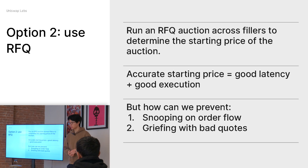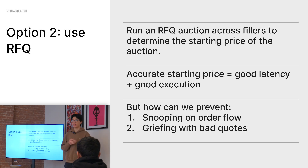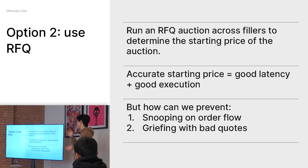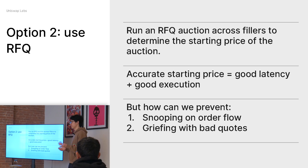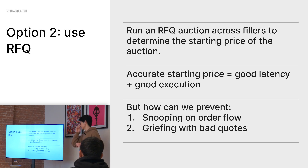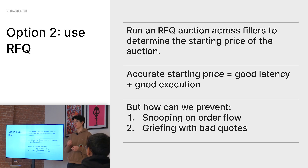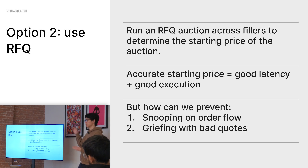Another option is to use an RFQ system. Imagine at the time when the order is quoted, we run a simple RFQ auction across some set of fillers to determine the starting price — one way to get a read on the fair market price for the swap. The benefit is that if it's accurate, we get really good latency and really good execution. However, because we're publicizing some order flow at a very critical step — quote time — we need to prevent two things: snooping on order flow, which is adversarial selection between fillers, and griefing with bad quotes. A rogue filler quoting incorrectly could impact the whole system.